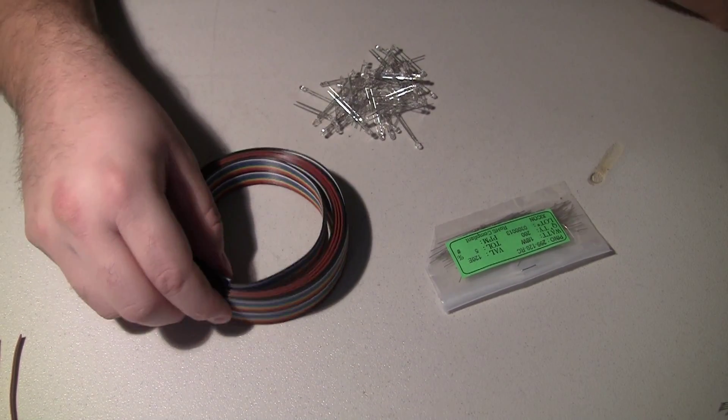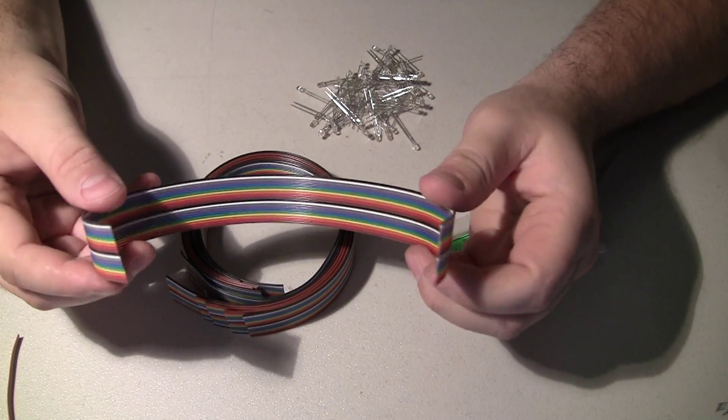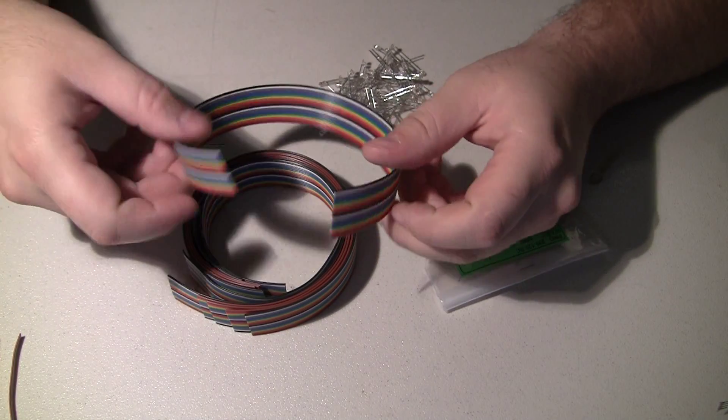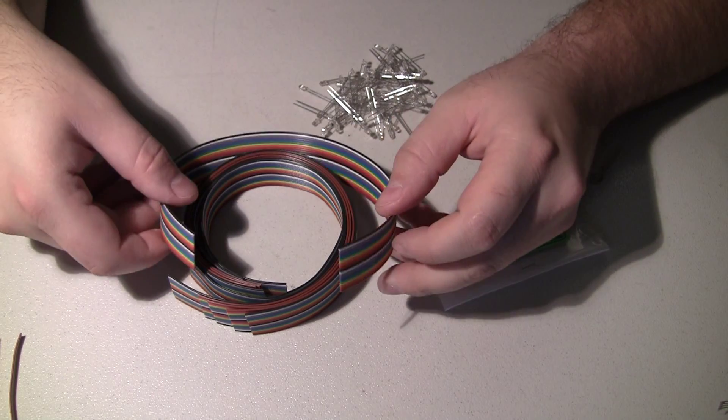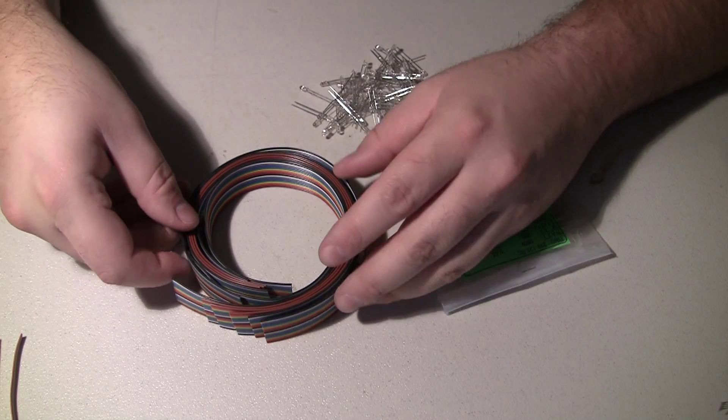So I buy this ribbon cable. It's multicolored. I believe it comes pre-cut in one-foot lengths and there's 20 conductors, so I need two conductors per LED. So I end up with 10 LEDs per strip.